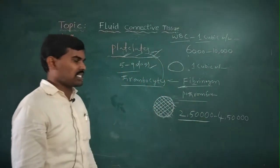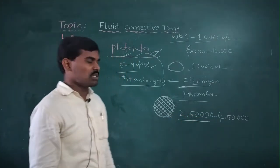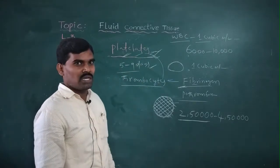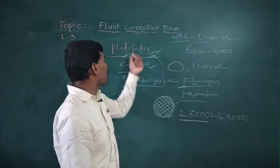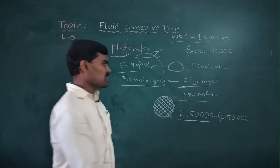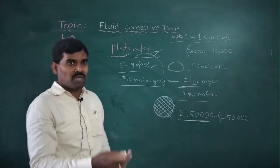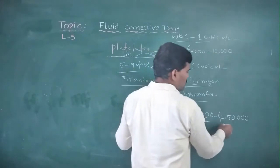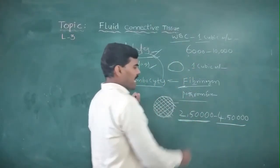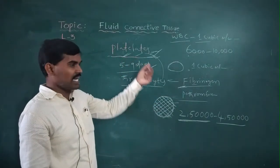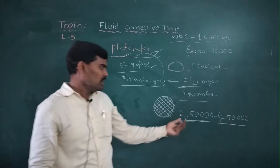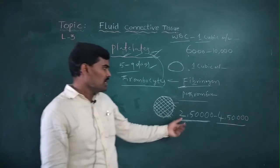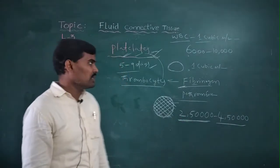The normal platelet count is 2,50,000 to 4,50,000 per cubic millimeter. In conditions like dengue fever and malaria fever, the platelet count decreases, falling to 1 lakh or below — sometimes as low as 20,000 to 30,000, which is a severe condition. In healthy humans with nutritional food, the count can reach up to 4 lakhs.